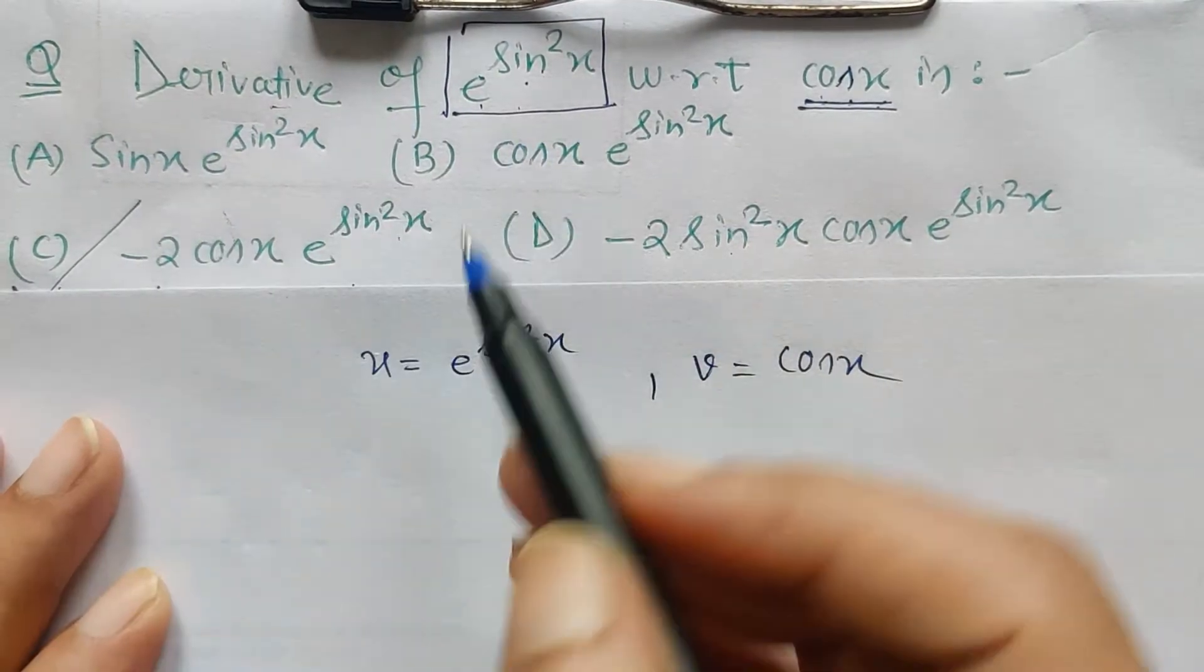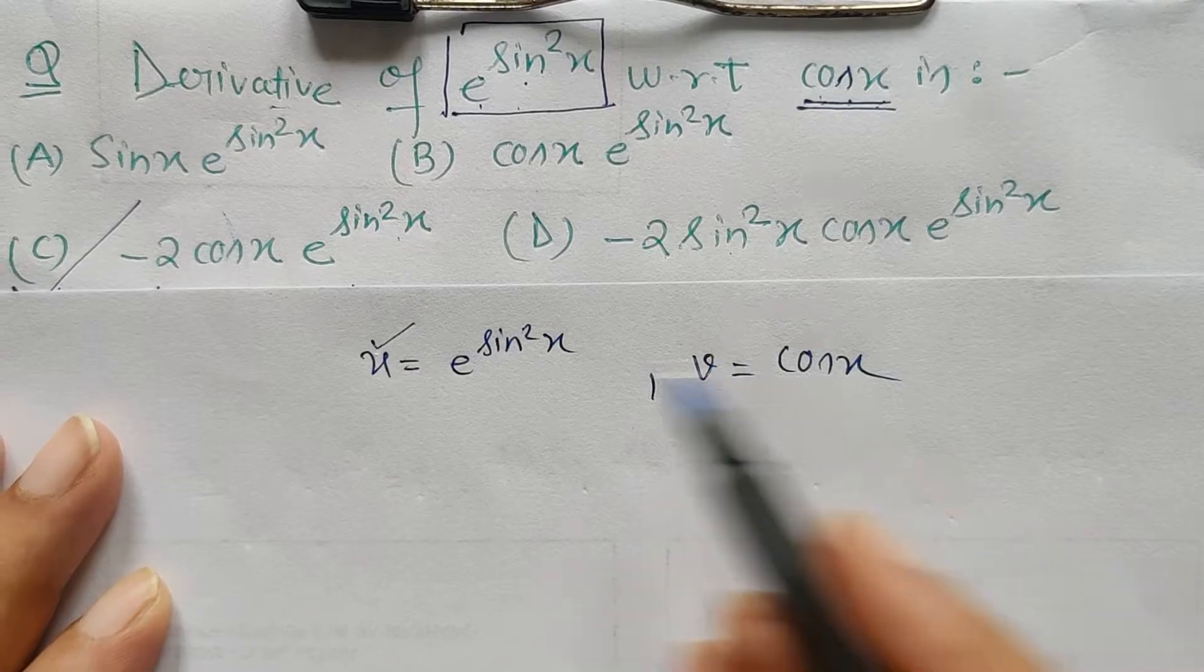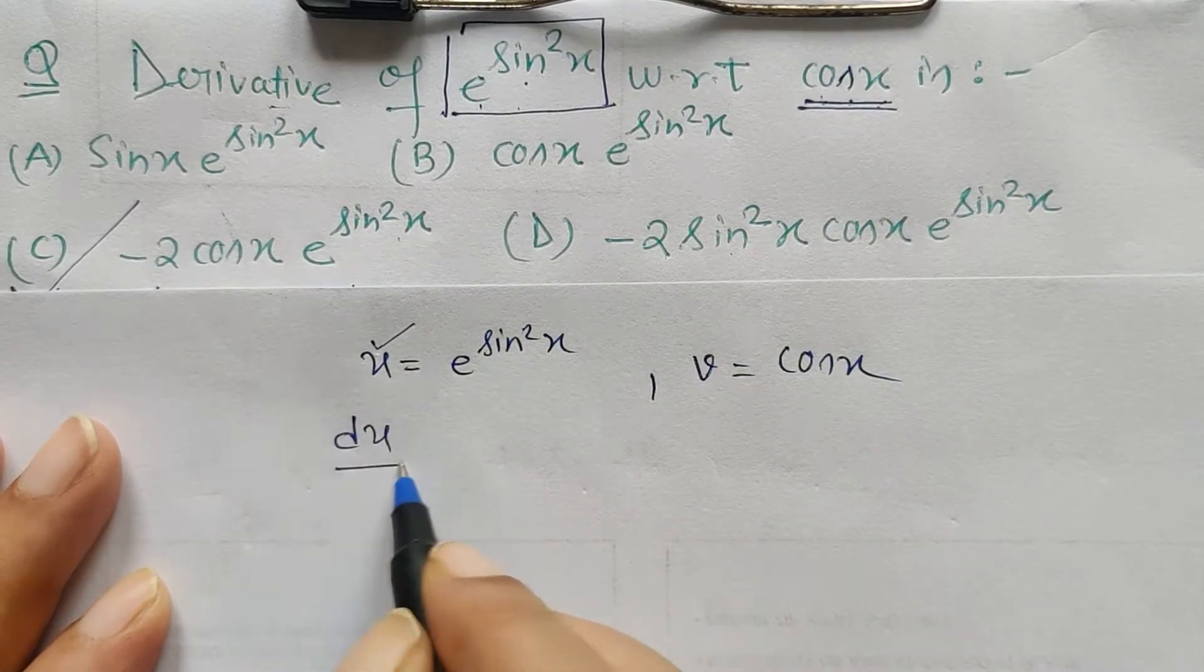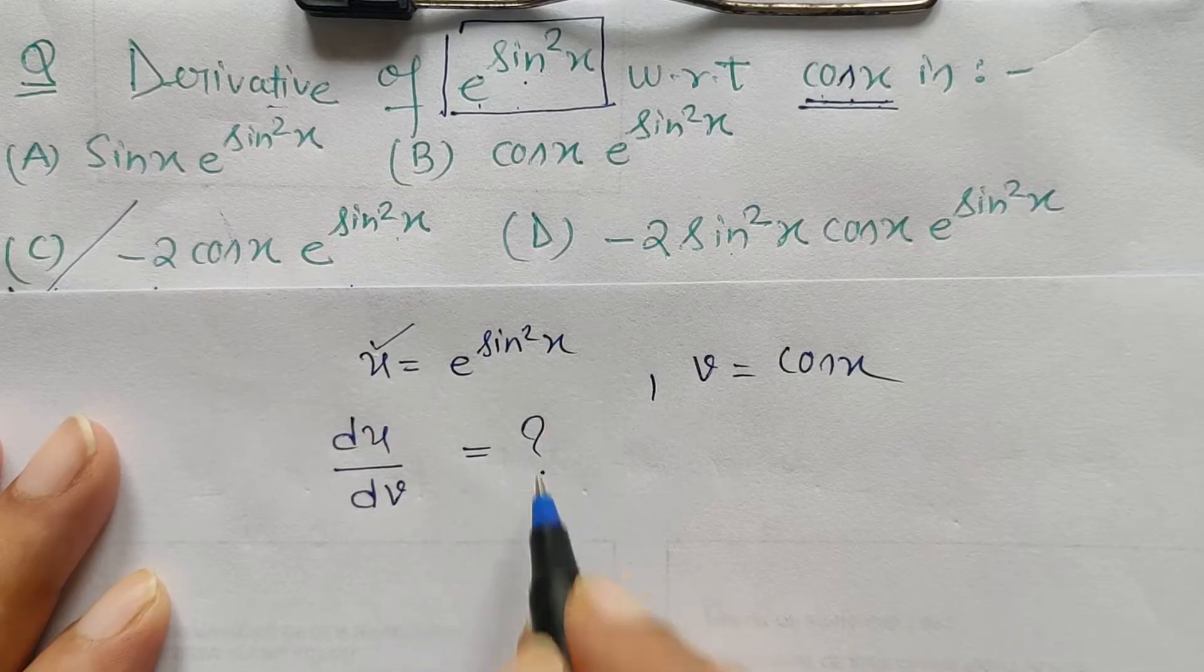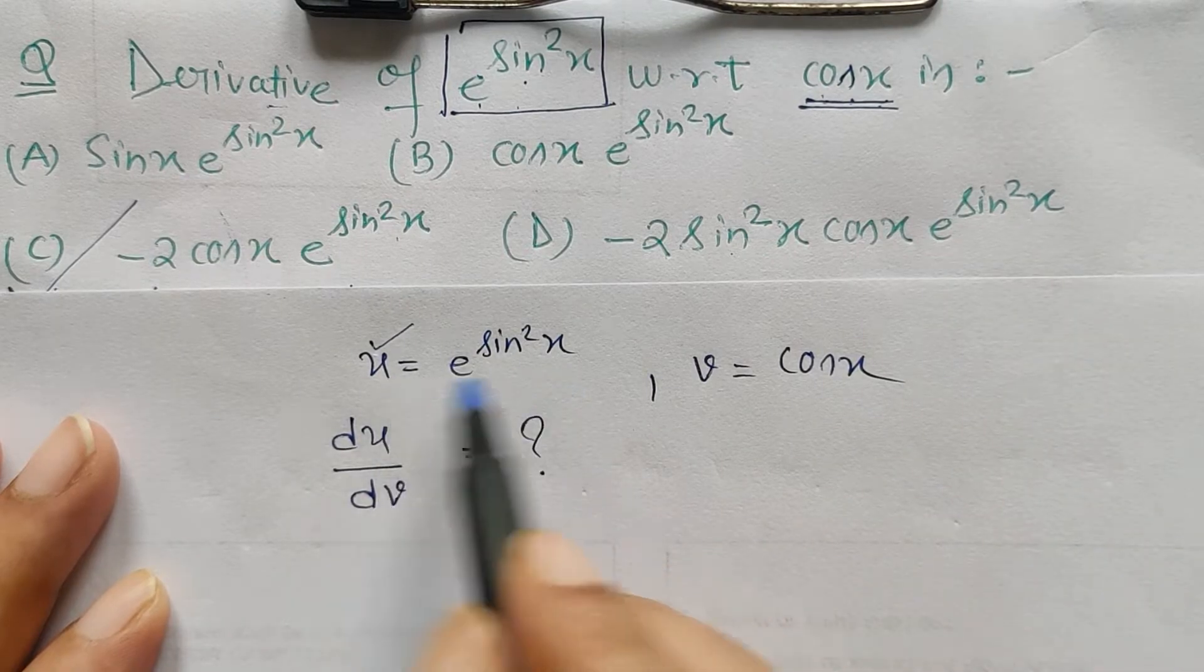Now if you read the question, derivative of u with respect to v, that means we are asked to find du upon dv. We are asked to find what is du upon dv, and since I have u in the form of x, v also in the form of x, so du by dv can easily be calculated if I have du by dx and dv by dx.